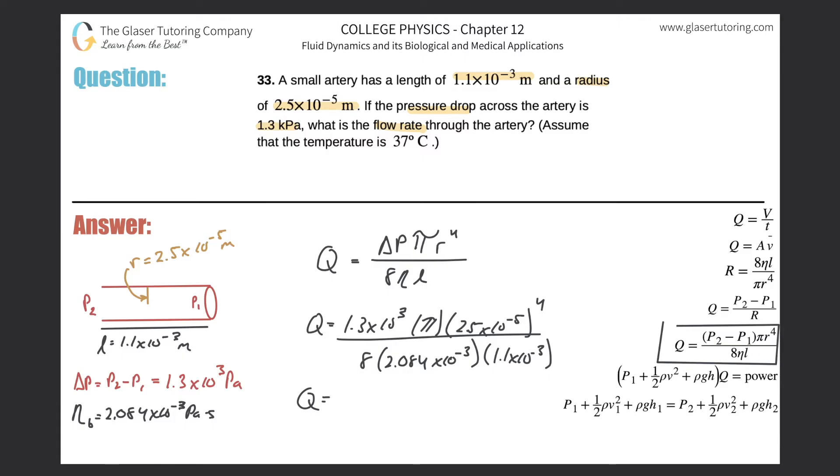So 1.3×10³ times π multiplied by 2.5×10⁻⁵ raised to the fourth. Then take that whole thing and divide it by 8 times 2.084×10⁻³ multiplied by 1.1×10⁻³.